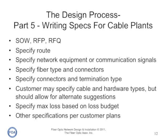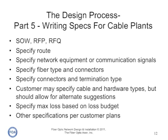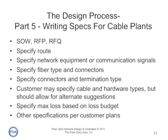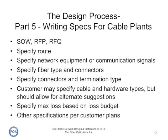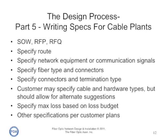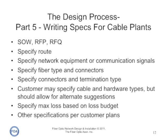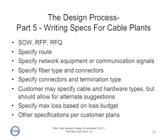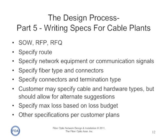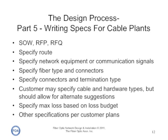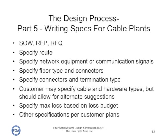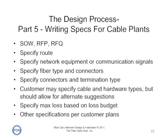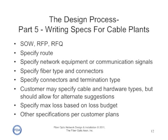Next, we write the specs for the cable plant. A complete statement of work — an internal document — exists that defines very specifically what we are doing. That can lead to requests for proposals and requests for quotes. We specify the route, the network equipment, the fiber type and connectors, the termination types we will be using, cable and hardware types — but sometimes we need to allow for alternative suggestions from manufacturers or contractors who bid on the project, because they may have ideas that save us money and make a more efficient system. We specify the maximum loss based on the loss budget and any specifications per the customer plans that define the network.